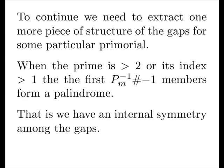To continue, we need to extract one more piece of structural information. When the prime is greater than two or its index is bigger than one, the gap members except the last gap form a palindrome. That is, we have an internal symmetry among the gaps.